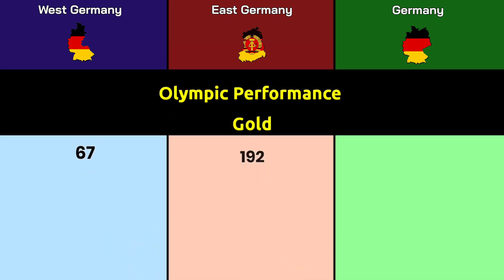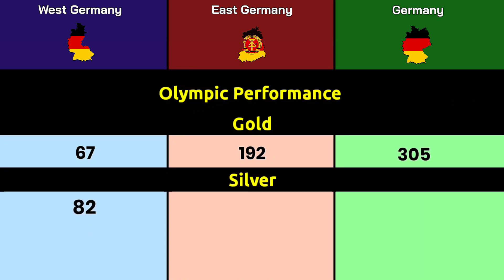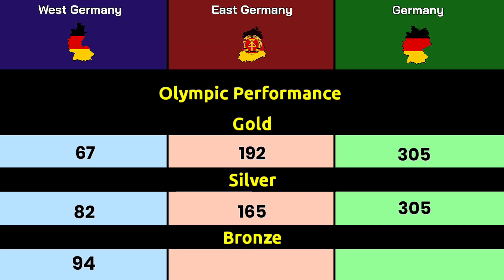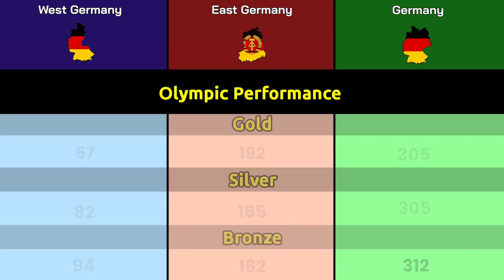Gold medals: West Germany won 67, East Germany won 192, and Germany has won 305. Silver medals: West Germany won 82, East Germany won 165, and Germany has won 305. Bronze medals: West Germany won 94, East Germany won 162, and Germany has won 312.